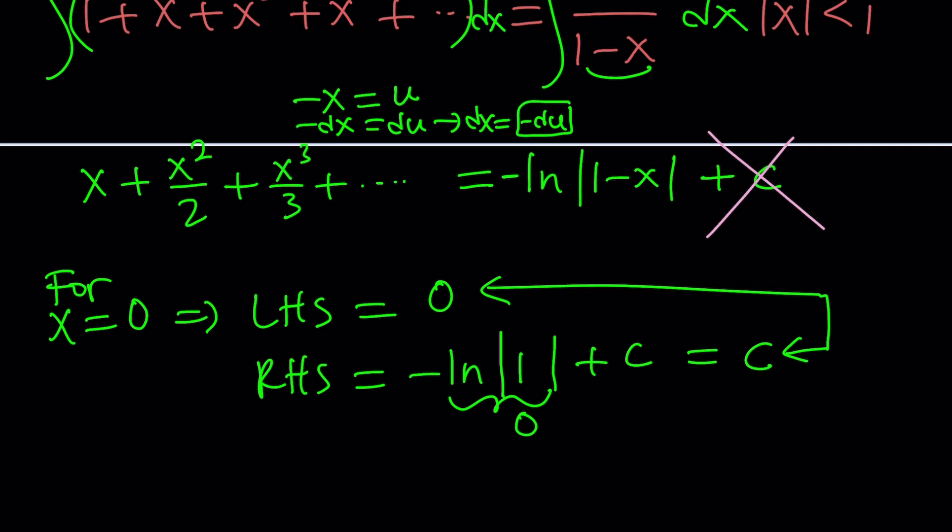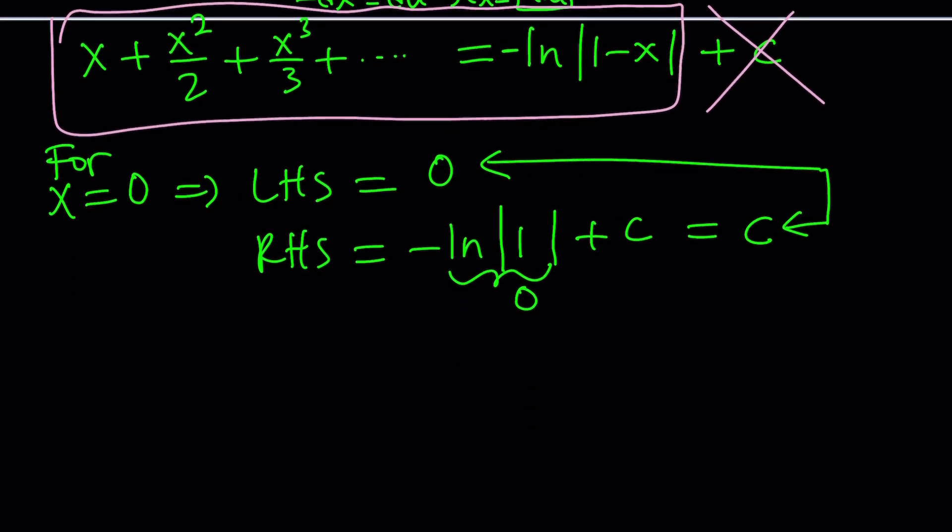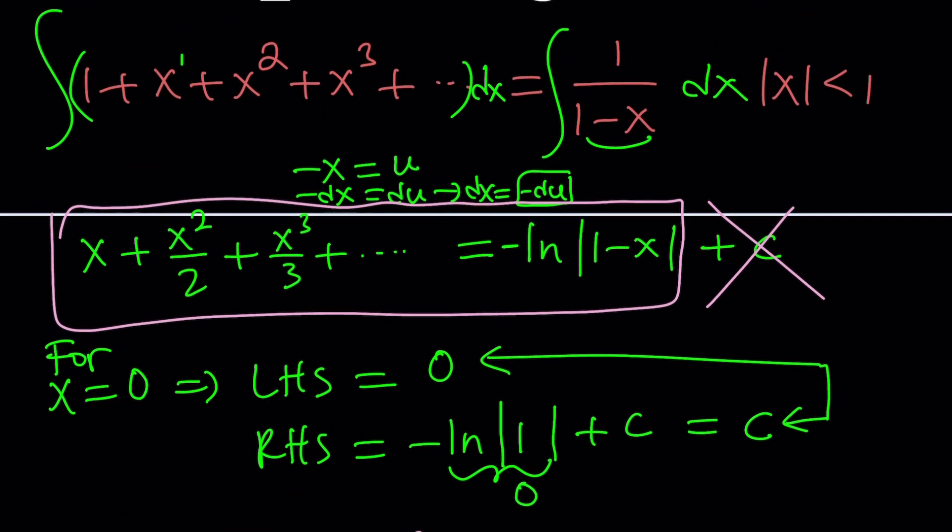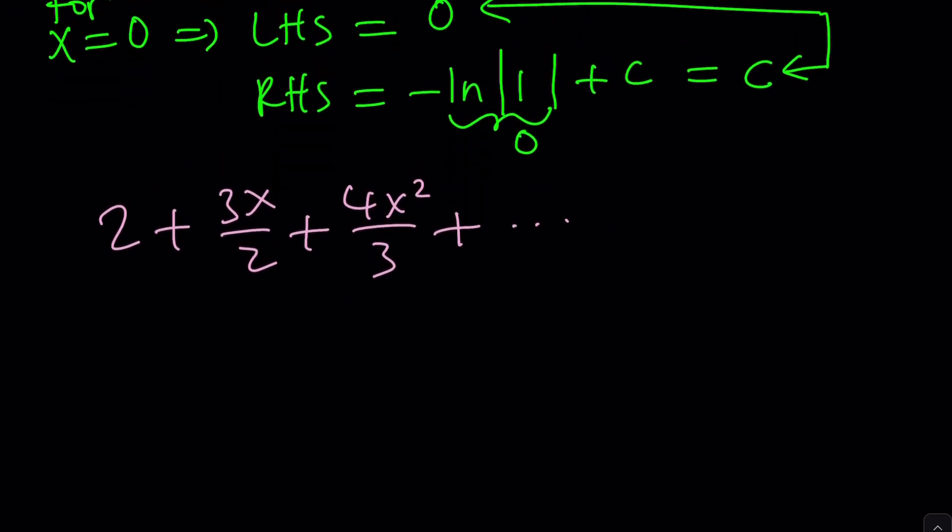Now, this is the million-dollar question. How do we go from this to our sum, right? This is what we have so far. And our sum is 2 plus 3x over 2 plus 4x squared over 3, dot, dot, dot. Should we differentiate it? Should we multiply by 2? Well, multiplying by 2 kind of makes sense because you're going to get 2x and then you can differentiate it. But guess what? If you differentiate, you're going to go back to the infinite geometric series, which is not going to be helpful because notice that the coefficients here are not always 1, right?